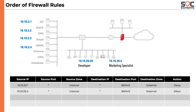Then we write a second rule to allow the marketing specialist to access the internet. The rule goes: source IP 10.10.20.4, any source port, coming from the internal zone, trying to reach any destination IP address on port number 80 or 443 — action should be allowed. So according to the company policy, we have configured the rules and hope it works as expected.